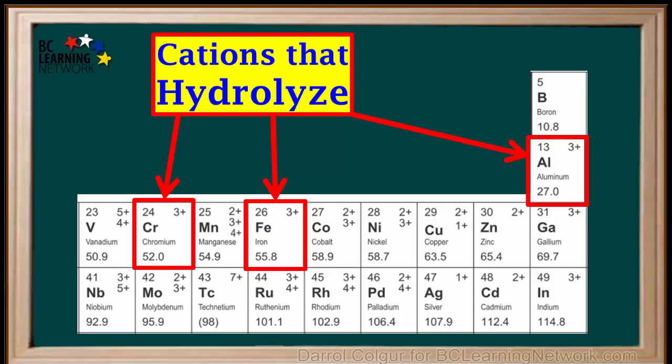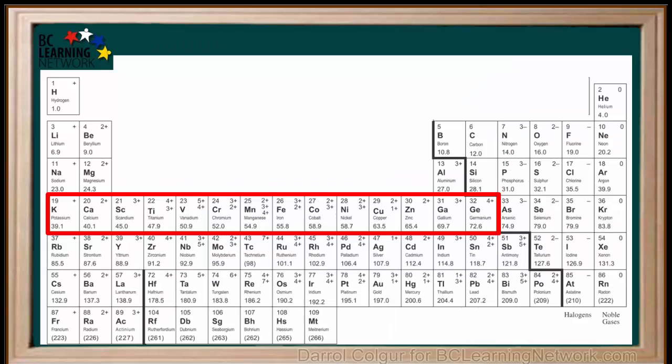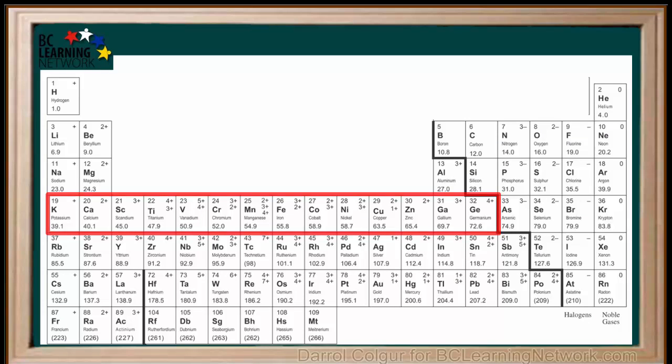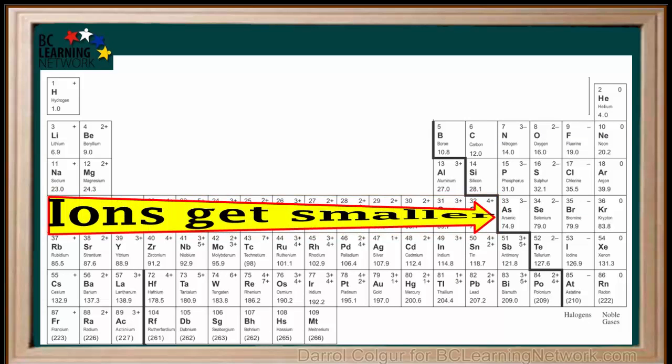The three metallic ions that we will consider in CHEM12 are the chromium 3 ion, the iron 3 ion, and the aluminum ion. Notice these all have positive 3 charges. You may remember from chemistry 11, that as we go across a period from left to right, positive ions tend to get smaller.